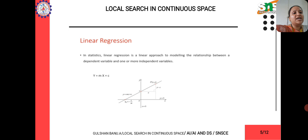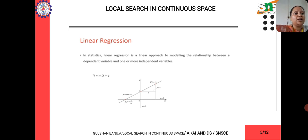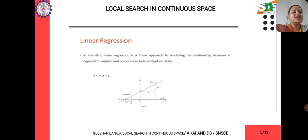When you take linear regression — which is statistics — it is a linear approach to modeling the relationship between the dependent variable and one or more independent variables. The dependent variable is something which is static, and the independent variable is dynamic and can be changed.